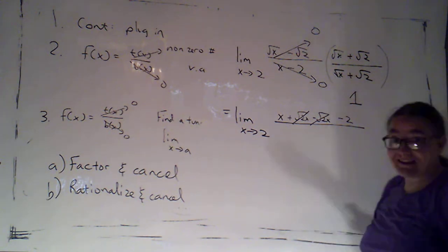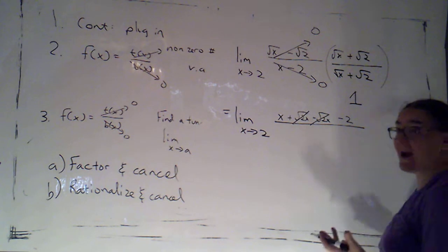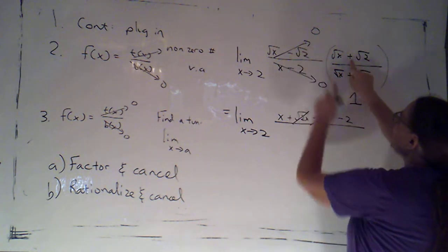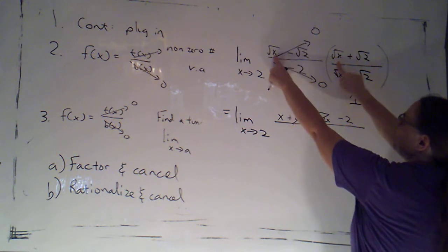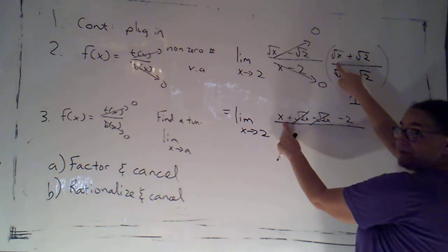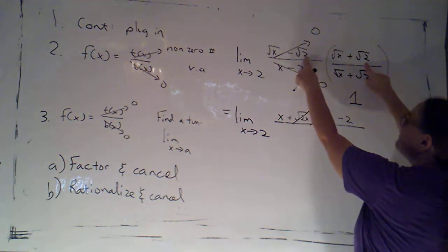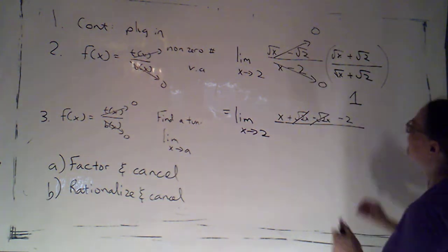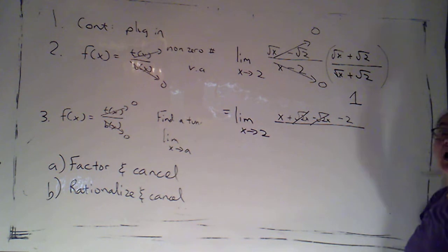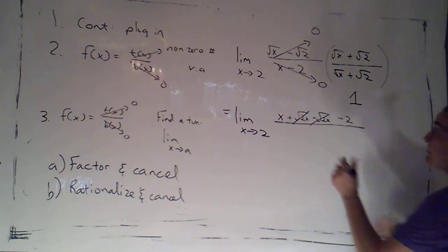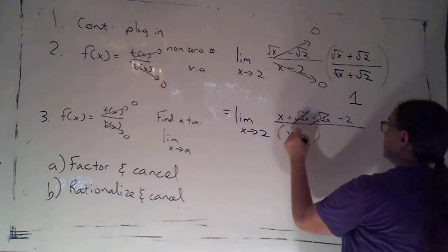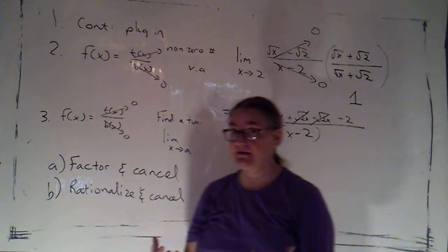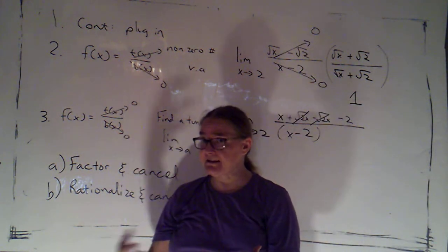Essentially, I'm using the notion of a difference of two squares in doing this. Same two terms added and subtracted. I'm going to get the first term squared. Root x squared is x. And then minus the last term squared. Root 2 squared is 2. Now, on bottom, really important to be lazy. Now this is what I like to call strategic laziness.